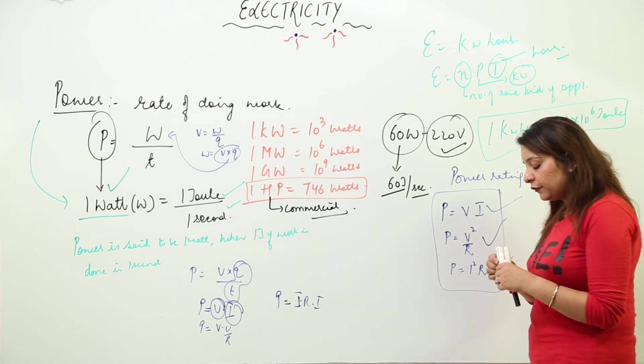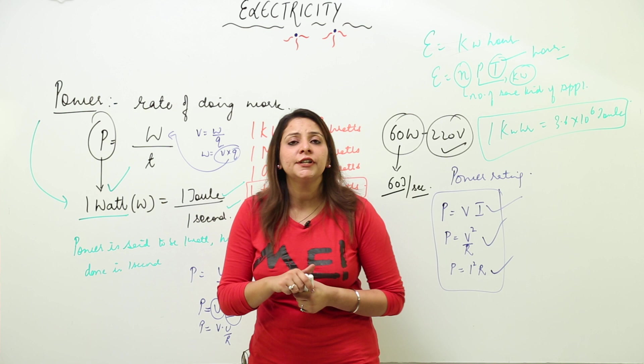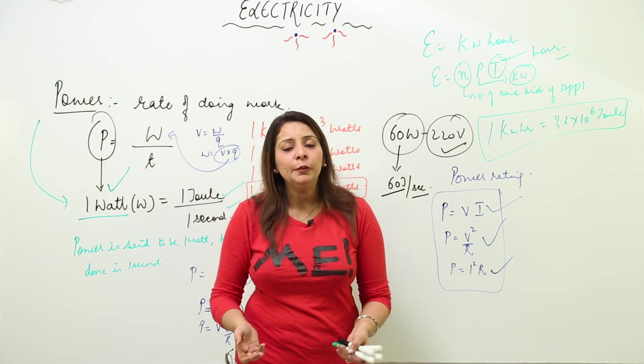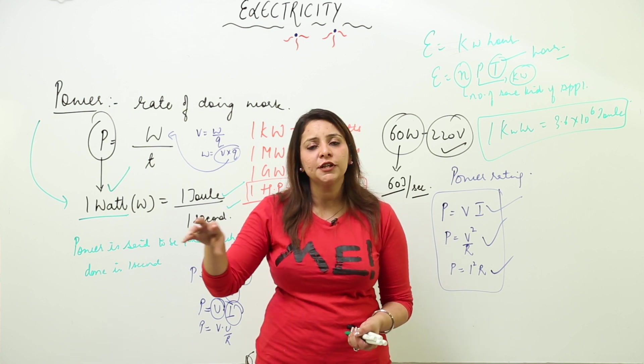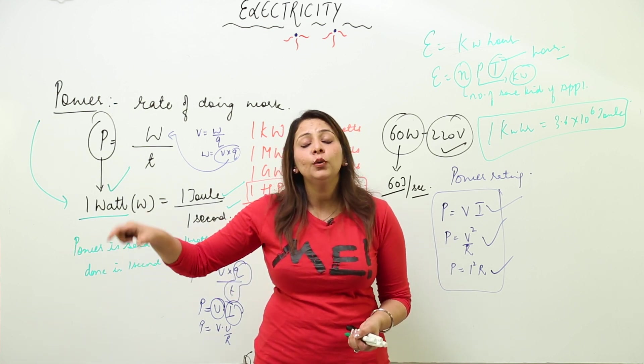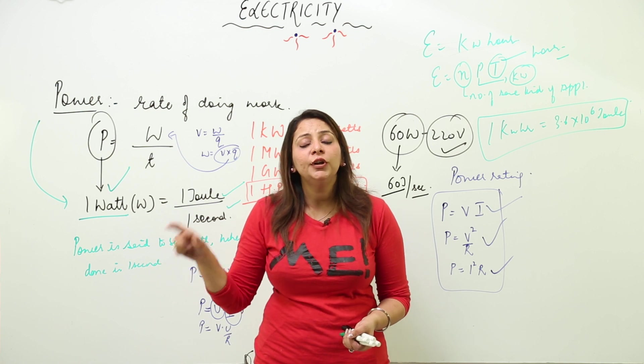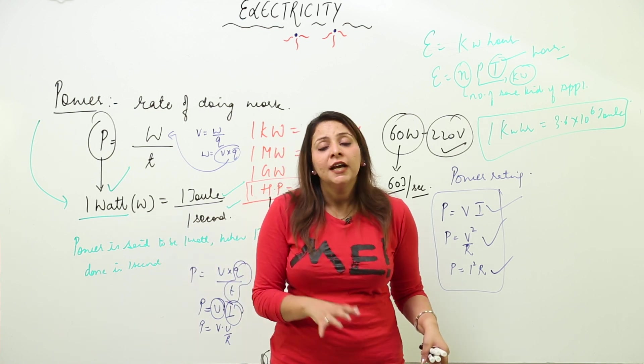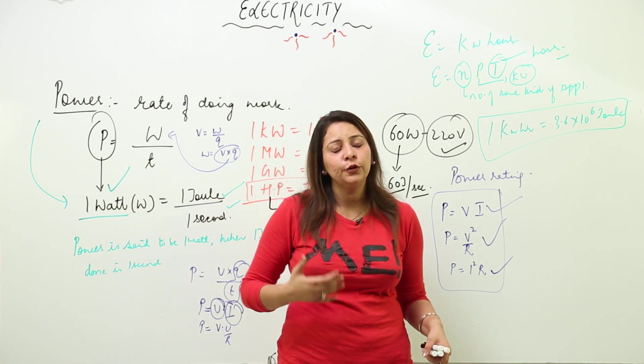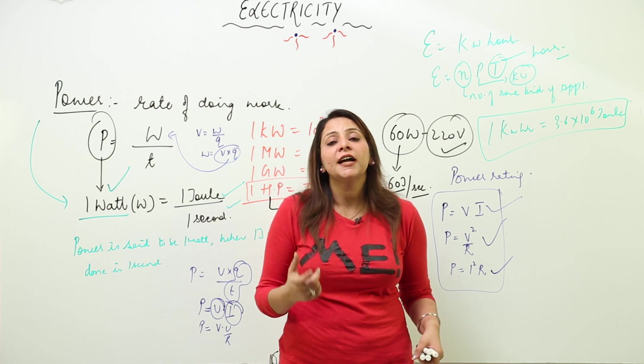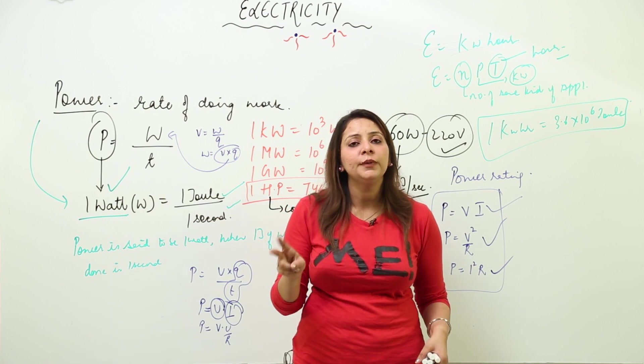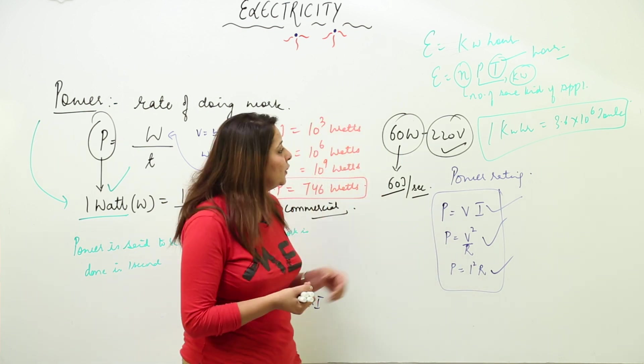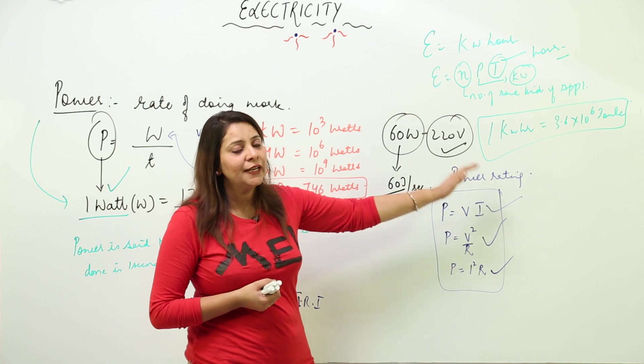You must have seen your electricity bill at home. In that bill, the total number of units consumed is given. Units mean kilowatt-hour. If your bill shows 36 units, you've consumed 36 kilowatt-hours. Unit and kilowatt-hour mean the same thing.